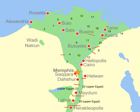A nome, from ancient Greek 'nomos', was a territorial division in ancient Egypt. Each nome was ruled by a nomarch. The number of nomes changed through the various periods of the history of ancient Egypt.